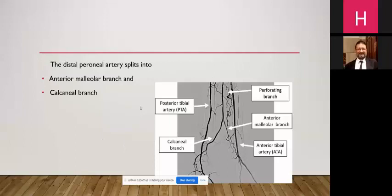More importantly, the distal peroneal artery splits into an anterior malleolar branch and a calcaneal branch. These two branches are sometimes the sole blood supply of the foot when the anterior tibial and the posterior tibial arteries are occluded.